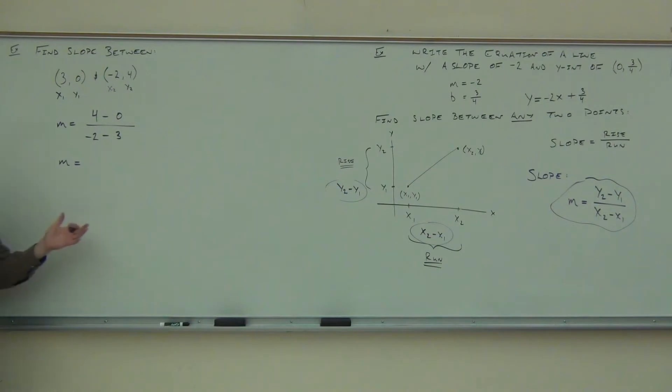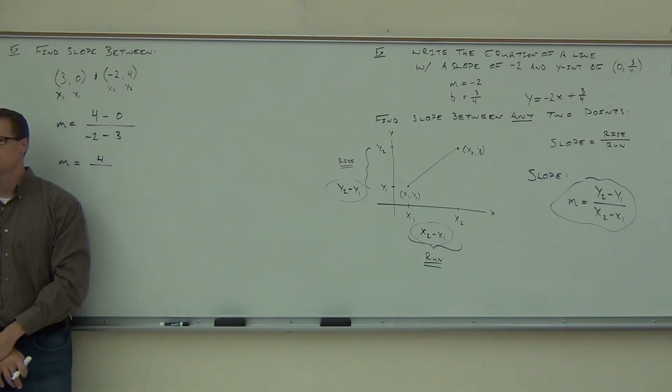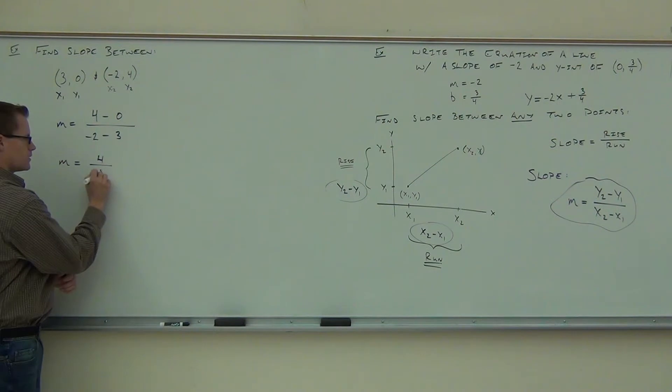Okay, so we have 4 minus, what's 4 minus 0? We're going to have 4. And we have negative 2, what's negative 2 minus 3? Negative 5. Perfect. 4 over negative 5.